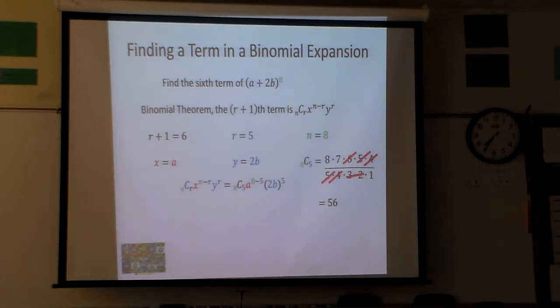Notice this A is to the 8 minus 5. So that means it's going to be A to the third power. And this 2B is to the fifth power. Well, the 5 goes to the 2, makes 32. So basically the A^3 B^5 will be fine, but take 56 times 32, and I get 1,792 A cubed B to the fifth is the sixth term of this particular factor.